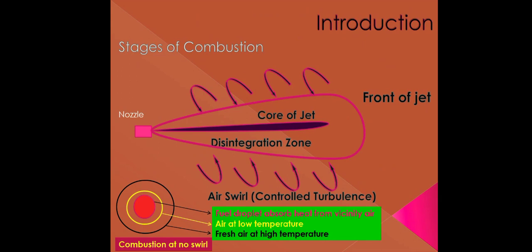As seen from the figure, air swirl helps to disintegrate the fuel jet into small droplets and form a combustible mixture. Air swirl ensures that sufficient air is available to support flame travel in the engine to achieve complete combustion of fuel.